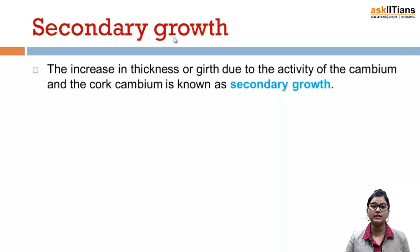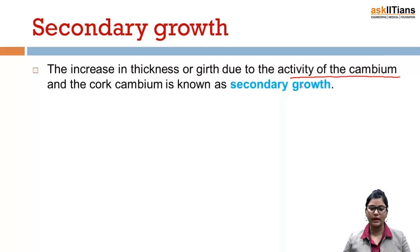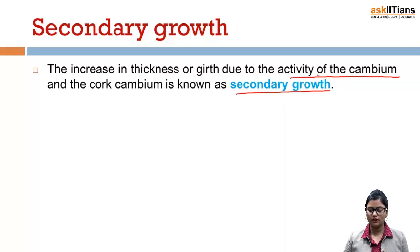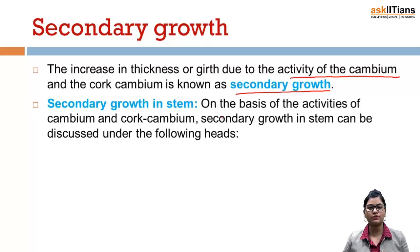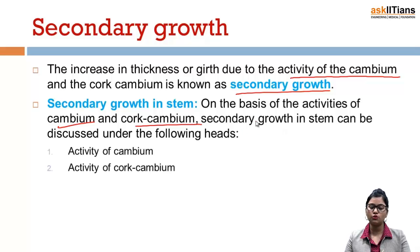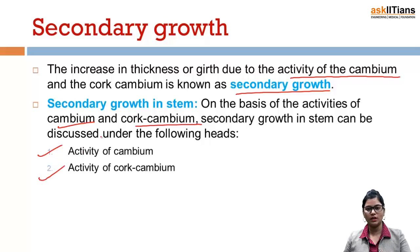Secondary growth in dicot stem — the increase in thickness, that is the increase in girth, is due to the activity of the cambium and the cork cambium, and it is known as secondary growth. Secondary growth in stem happens due to the activity of cambium and cork cambium, and it involves two steps: activity of cambium and activity of cork cambium.